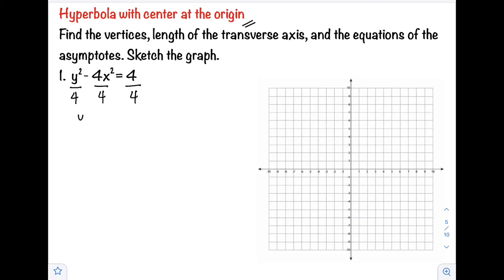Then simplify. We have y squared over 4 minus x squared over 1 equals positive 1.